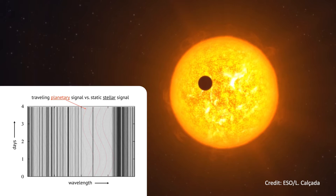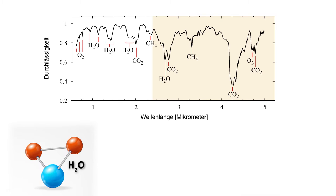We look for the molecular fingerprints in the spectra, and each molecule produces a very unique pattern. When we measure a specific pattern we know exactly what molecule is inside the atmosphere. But we can obtain much more information — we can get information about the rotation of the atmosphere, winds present in the atmosphere, also pressure and temperature. This is a very powerful tool to study planetary atmospheres.